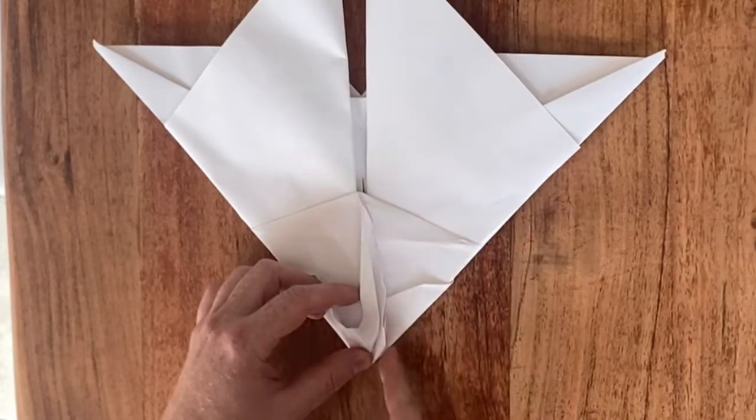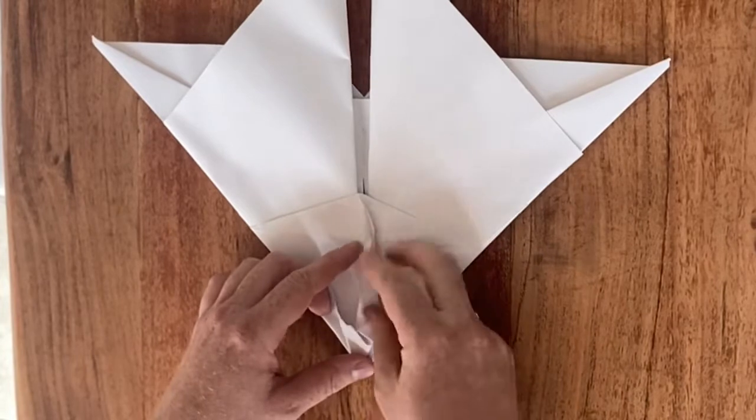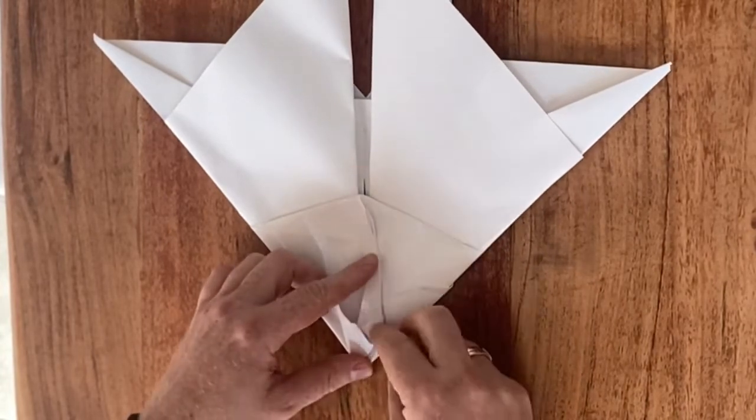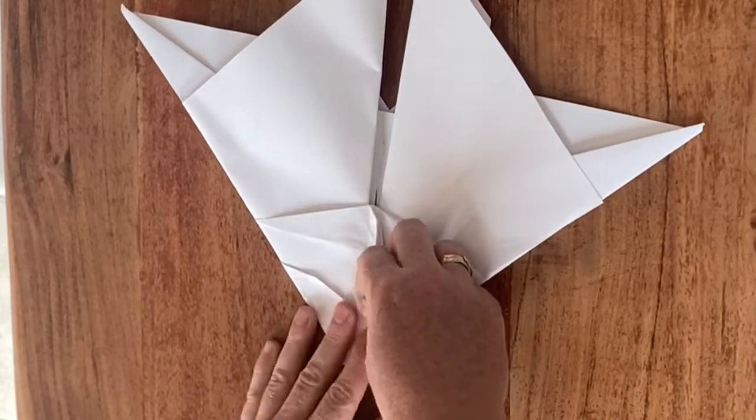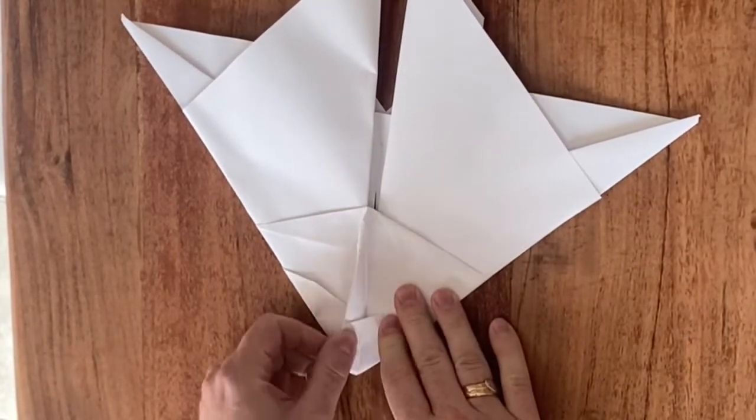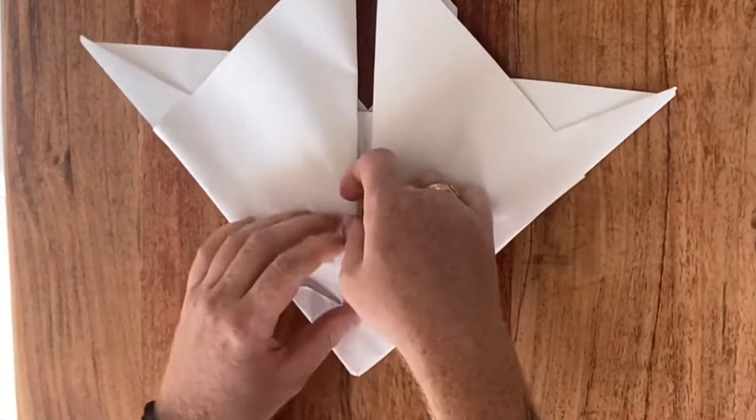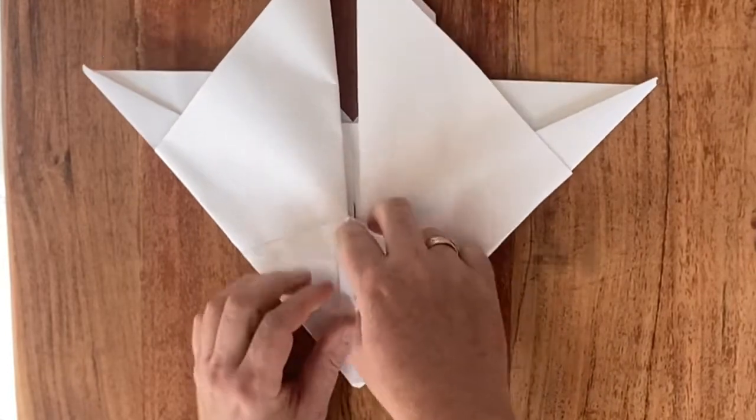So you just fold this one around the previous one, like so. And then you can close it up using this layer, and that will keep it locked together. And then you put it all over to the other side like so, flatten it.